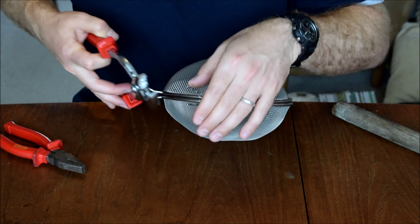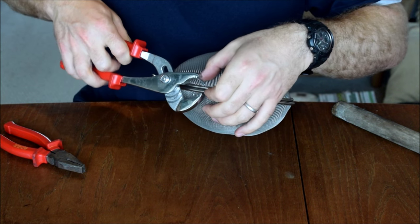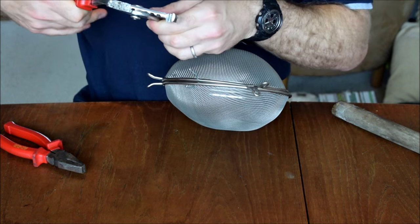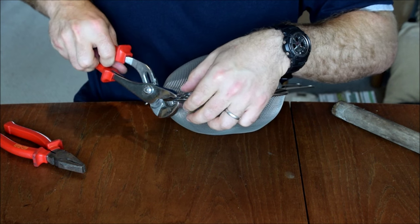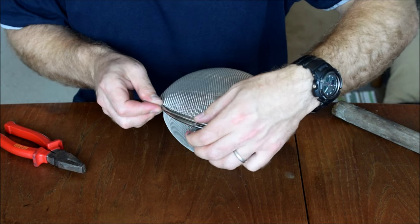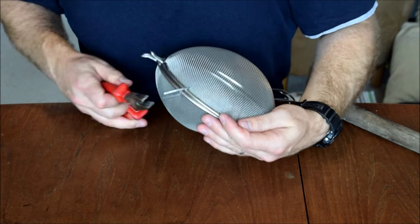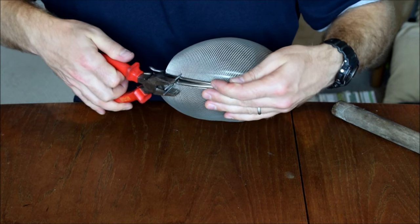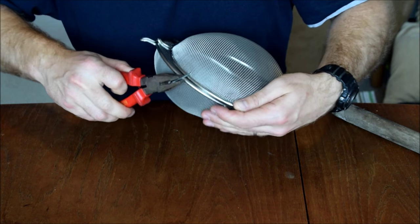The next step then is to twist this together so that it holds them together tightly. So close it up a little bit, and then when you've got it together, start to twist the two ends.